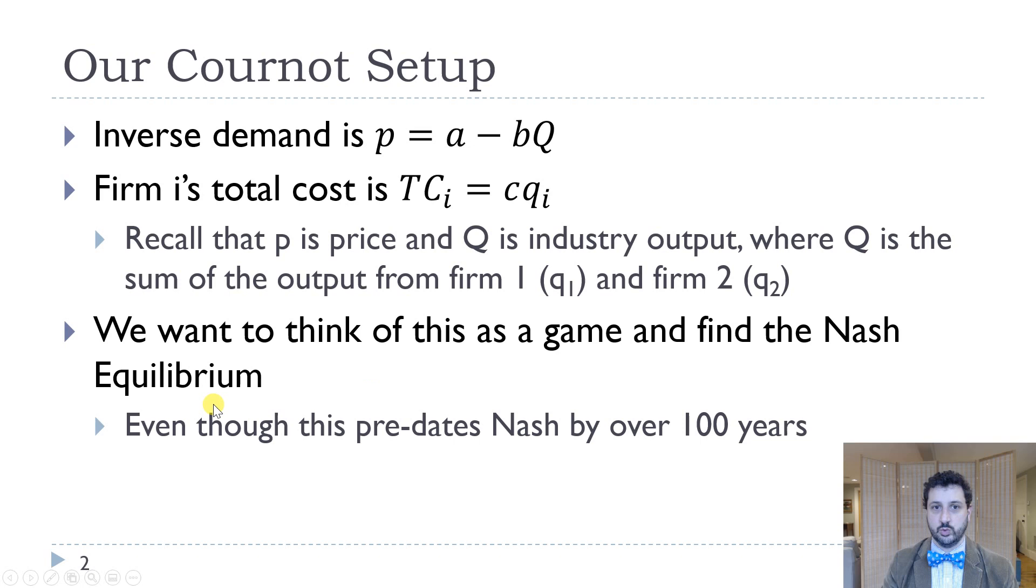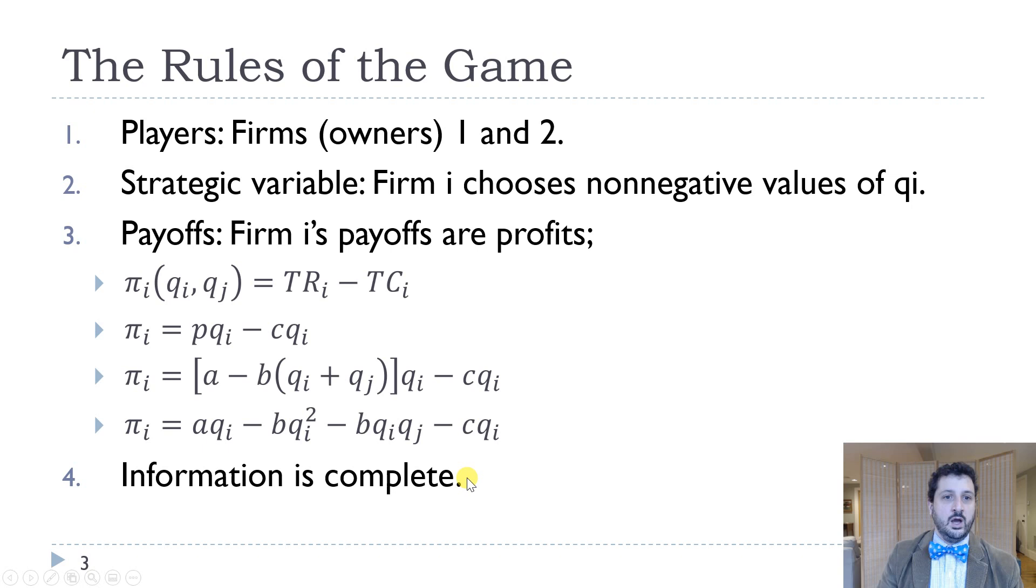And we're going to think of this as a game and find the Nash equilibrium, but of course it is interesting to remember that Cournot was writing this a long time before John Nash. So we have two players, the firms, one and two. The strategic variable is output, Q, and the payoffs are profits. So we're going to index our firms by i, but we're only going to have two, so we can just think of it as one and two.